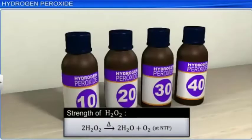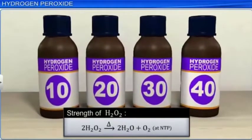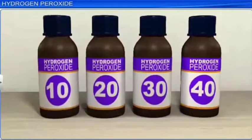It is customary to indicate the strength of hydrogen peroxide solution in terms of the volume of oxygen at NTP that one volume of hydrogen peroxide gives on heating. When the grade of H2O2 in volumes is given, its percentage strength can be calculated.